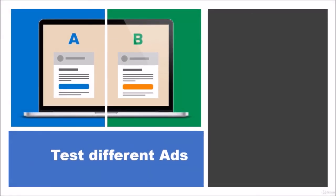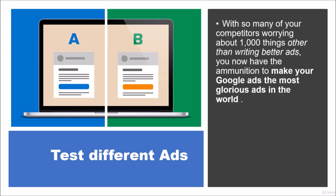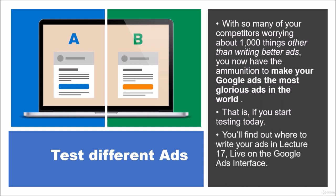Do some A/B testing. Test different ads and compare the statistics against one another. With so many of your competitors worrying about a thousand things other than writing better ads, you've now got the ammunition to make your Google ads the most glorious ads in the world. That's it — if you start testing today, you'll find out where to write your ads in Lecture 17, live on the Google Ads interface. I look forward to seeing you then.